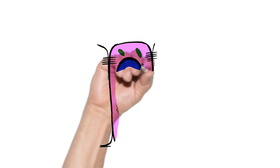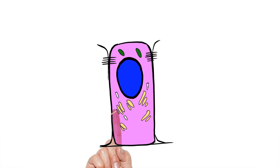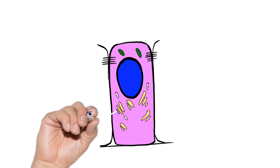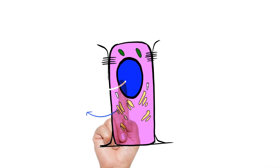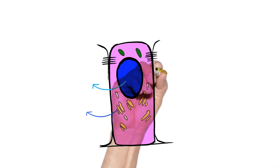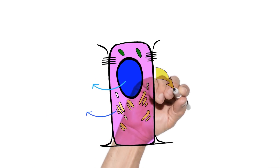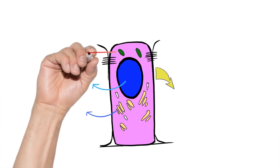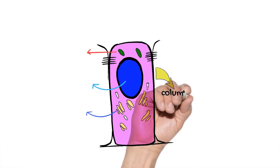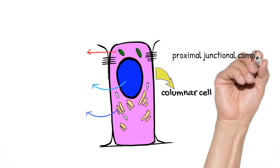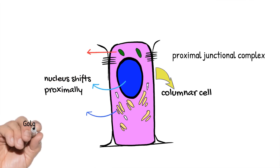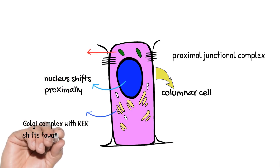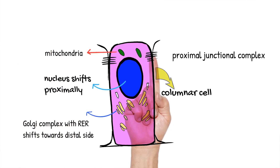During the organizing stage, the differentiating inner enamel epithelial cells change shape, becoming more columnar. The nucleus shifts towards the proximal end towards the stratum intermedium, and the Golgi complex moves towards the distal end. This process is termed reverse polarization, and by doing so the cell is preparing itself to produce the enamel matrix in its next stage.